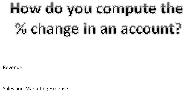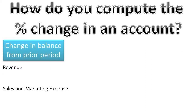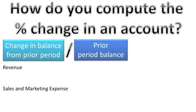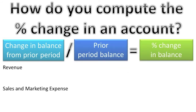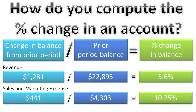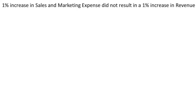Let's take our horizontal analysis another step forward and compute the percentage change in the dollar amounts from one year to the next using the following formula: change from the prior period divided by the prior period balance equals the percentage change in the balance. Using that formula, I computed the percentage changes for revenues and sales and marketing expenses. As you can see, sales and marketing increased by 10.25%, but revenues only increased by 5.6%. Clearly, a 1% increase in sales and marketing expenses did not automatically result in a 1% increase in revenues.